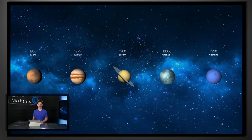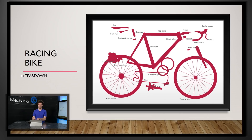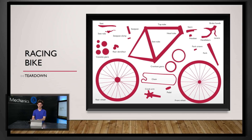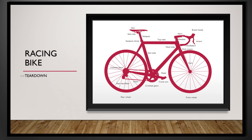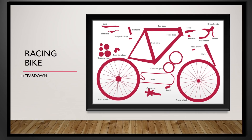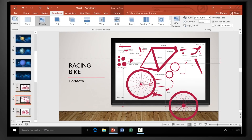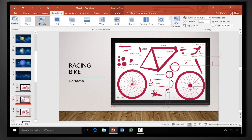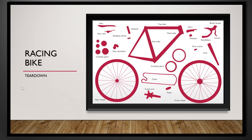Let me show you another example. Here I've got a bike, and what I want to do is separate all the parts to show how it's constructed. I've used Morph to move each part to a different part of the screen, and it automatically stitches it together. So let's say I want to swap these wheels — all I have to do is move them to the opposite sides of the screen, and Morph automatically stitches everything together for me.